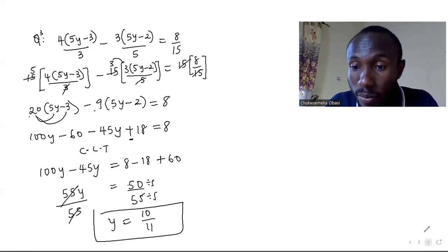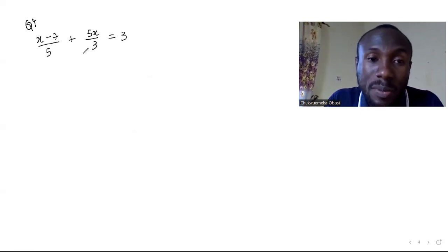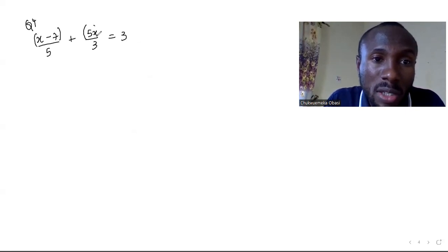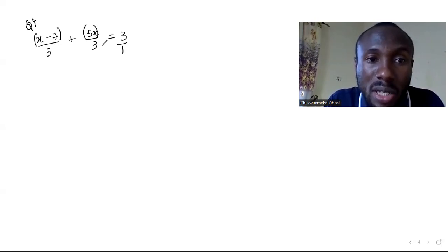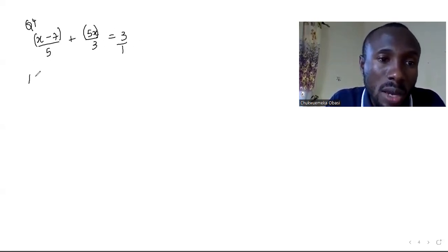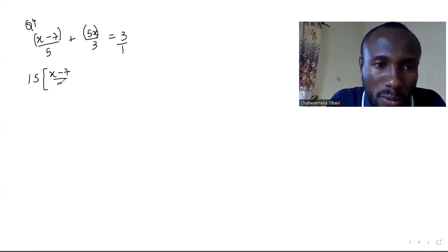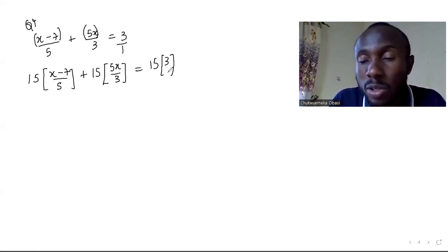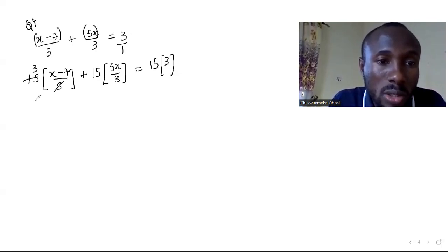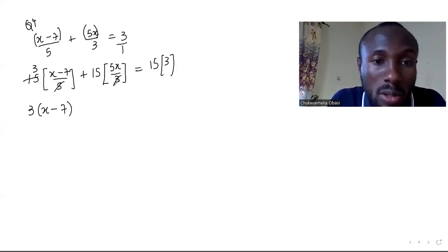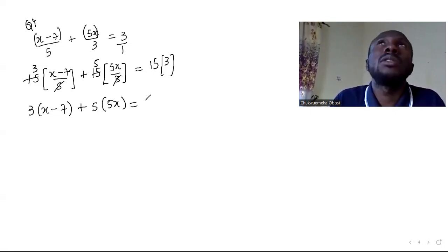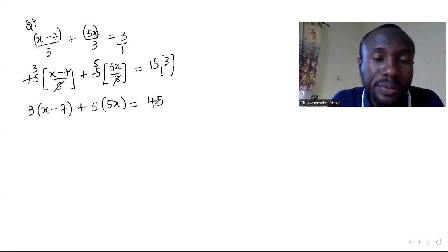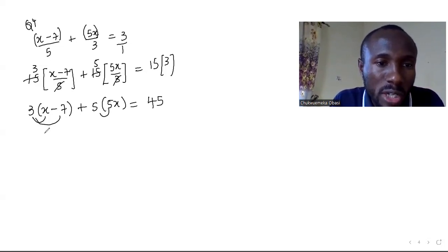Question 4 uses the same approach as question 3. Look for the LCM of the denominators: 3 and 5 give LCM of 15. Multiply everybody by 15: 15 multiplies (x minus 7) over 5, and 15 multiplies 5x over 3, equal to 15 multiplying 3 over 1 which is 45. The 5 cancels into 15 giving 3, and the 3 cancels into 15 giving 5.